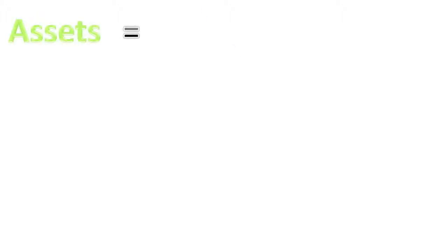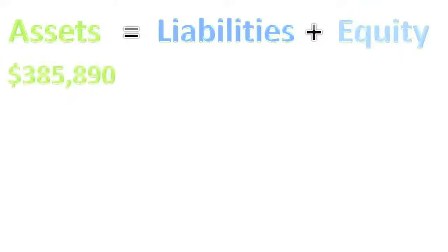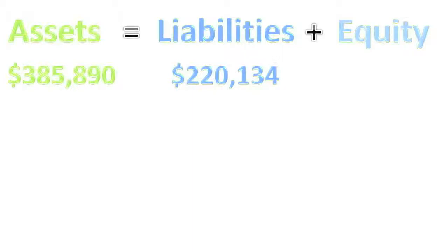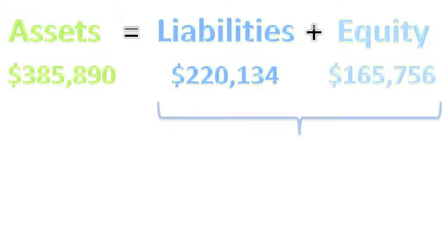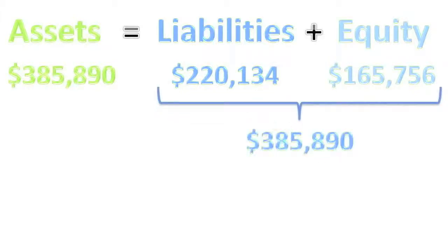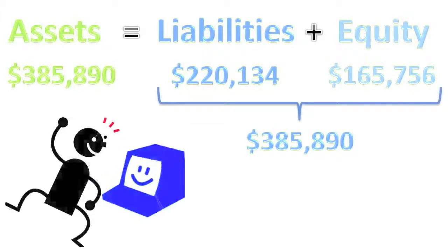Let's step back and look at that balance sheet from the most fundamental level, which is the balance sheet equation I introduced in the very first video of this course. Assets equal liabilities plus equity. Total assets 385,890 equals liabilities 220,134 and equity 165,756. Those added together give us 385,890 and we are in balance. Yippee!